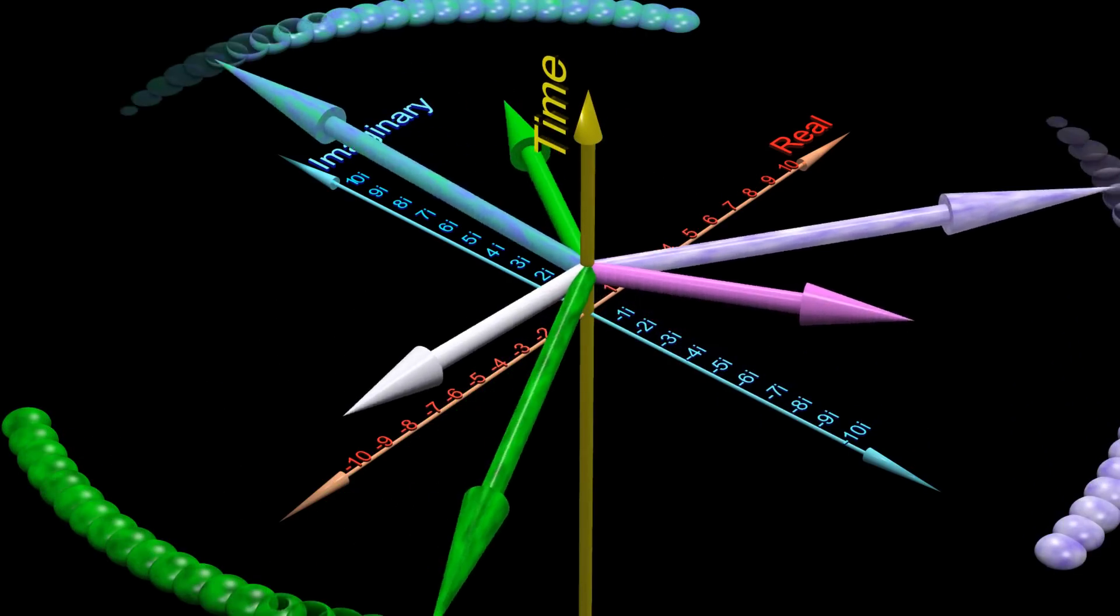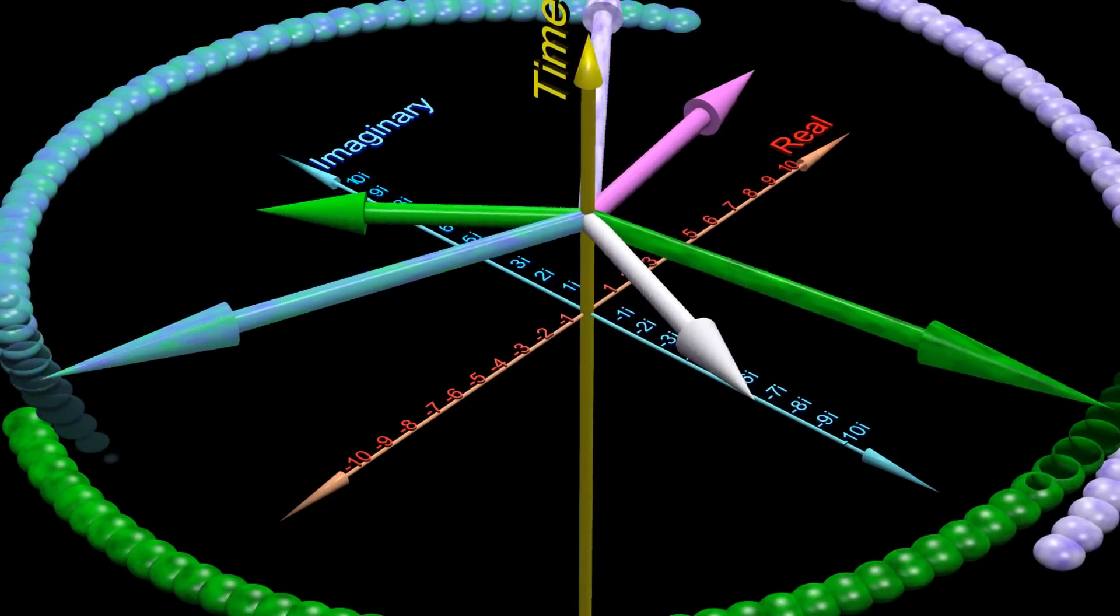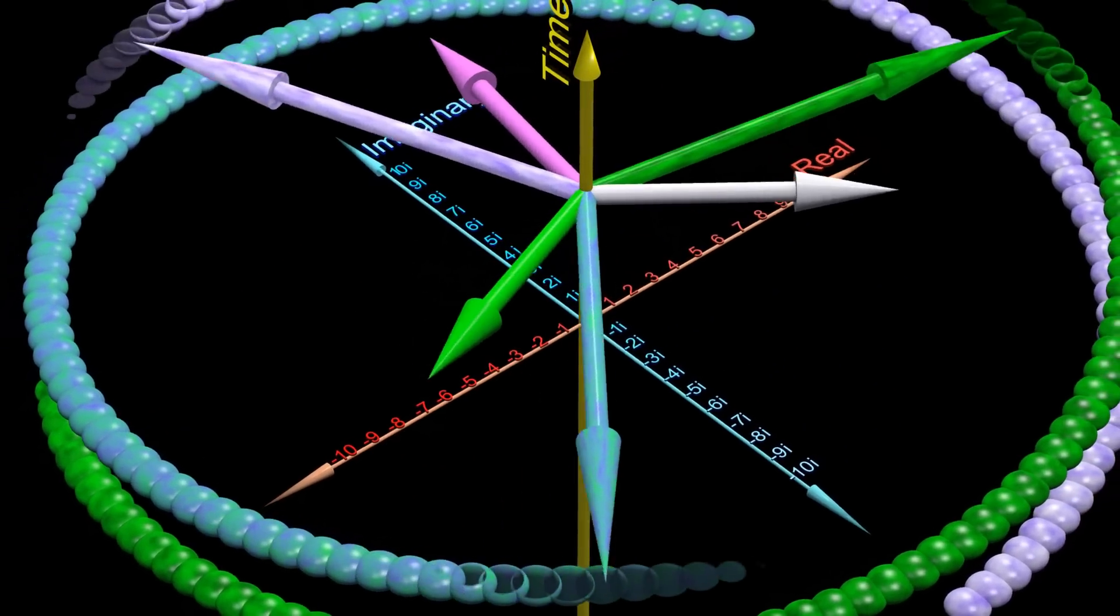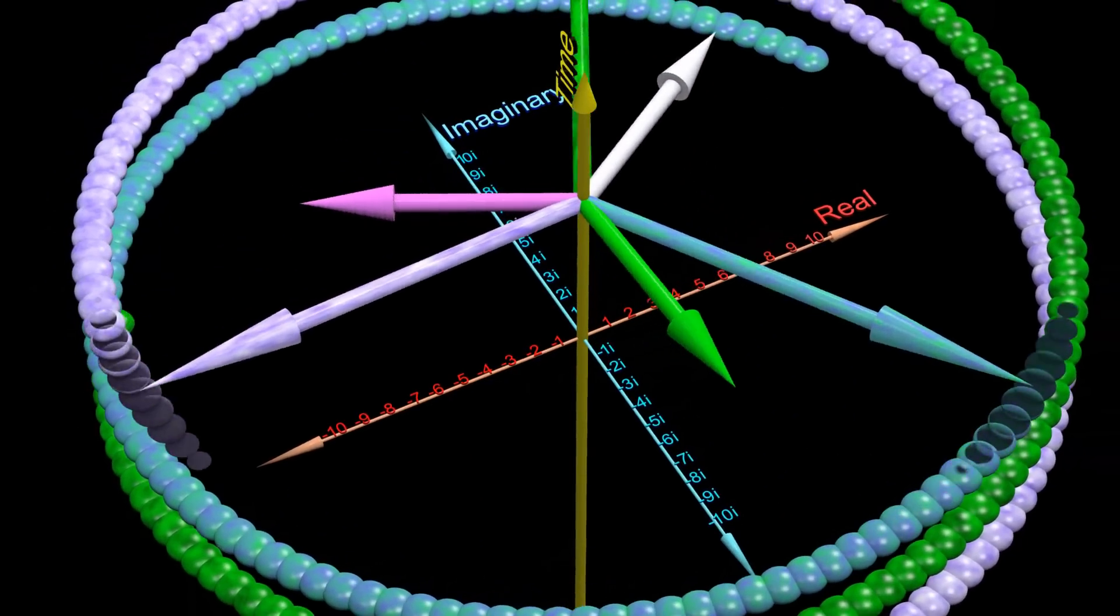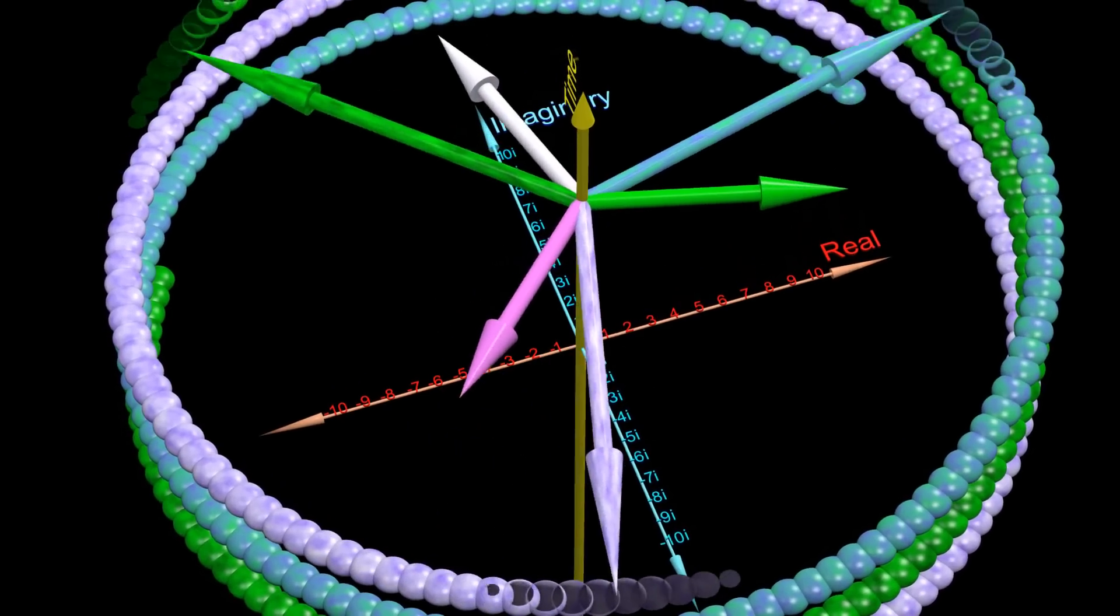Here, the line to line voltage waveforms are shown, which are larger than the line to neutral voltage waveforms by a factor of the square root of three.